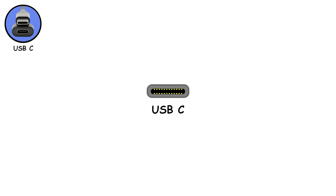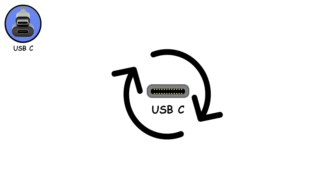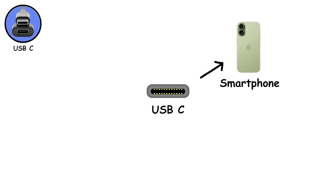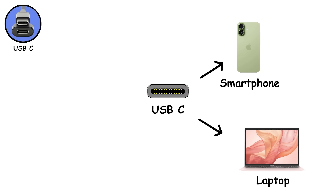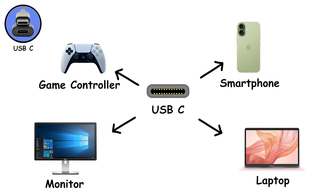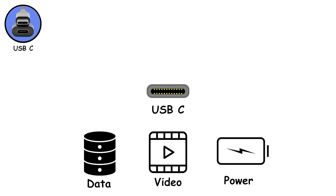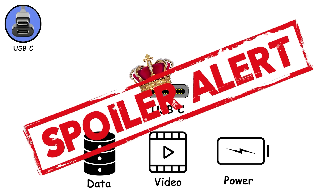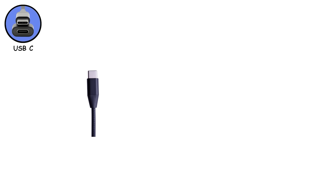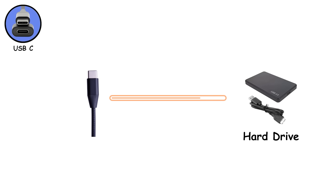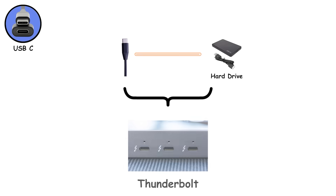USB-C is the reversible connector that basically does everything — phones, laptops, monitors, game controllers, even some cars. It can carry data, video, and power all at once. One cable to rule them all, though it's not always that simple. Sometimes you plug it in expecting blazing fast speeds and wonder why your old hard drive is crawling along. That's where Thunderbolt comes in, but more on that later.